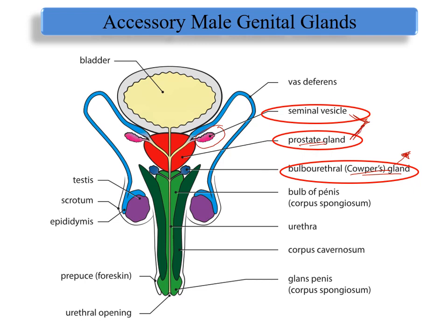These glands are located along the excretory genital duct system. They secrete seminal fluid which is essential for motility and nutrition of spermatozoa. Testosterone is required to maintain the functional activity of these accessory glands. The three glands are the prostatic glands, the seminal vesicle, and the Cowper's gland.